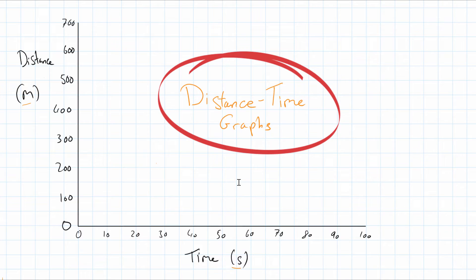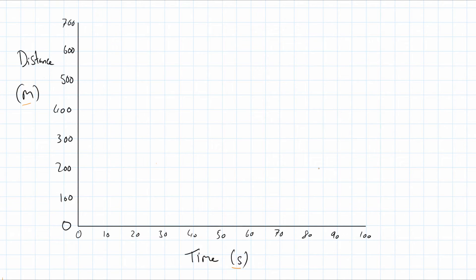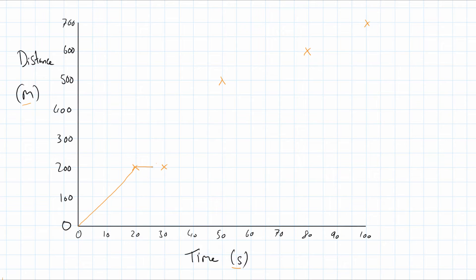Let's go ahead and draw a journey. I'll plot some points: a point at 20 seconds, one at 50 seconds going up to here, a point at 80 seconds at 600 meters, and finally a point at 100 seconds at 700 meters. Now I'll join those points up.